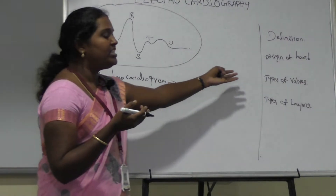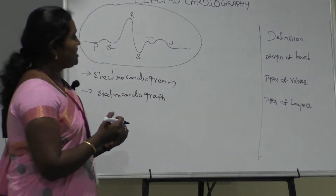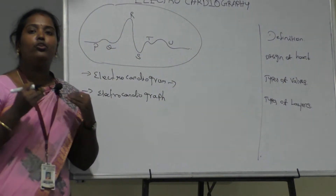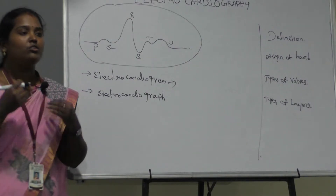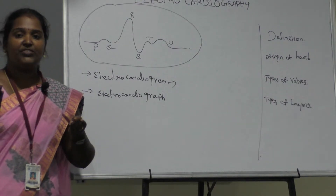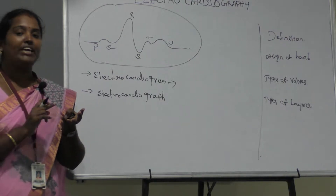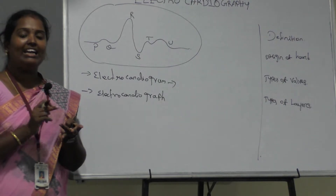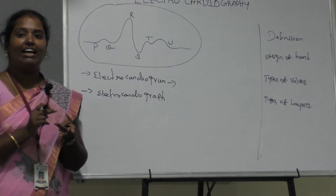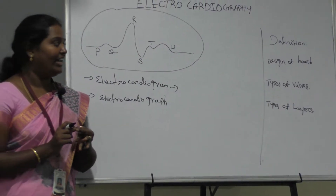Next point is the parts of the heart. Before proceeding further, we have to know about the various parts of the heart. Normally the heart can be classified into four types of chambers: right atrium, left atrium, right ventricle, and left ventricle.